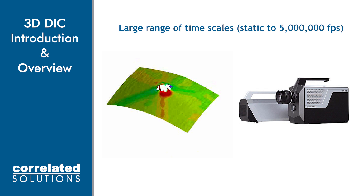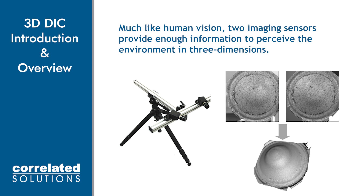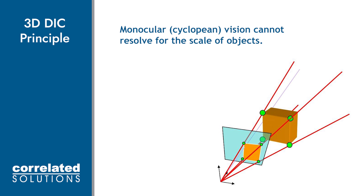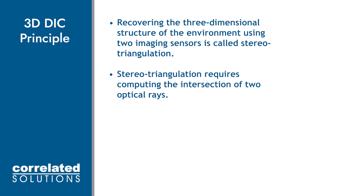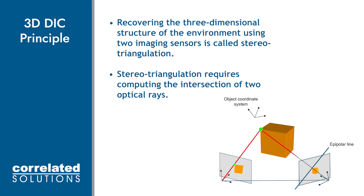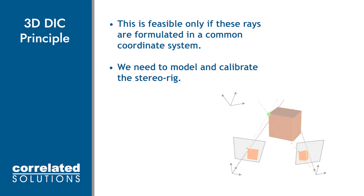Stereo imaging provides information from two sensors to perceive 3D information, similar to how two eyes allows us to have depth perception. With stereo imaging, we can now resolve how an object moves out of plane, which we can't with monocular vision. In order to build 3D information with two sensors, we use stereo triangulation. Stereo triangulation uses known information, like the locations of the sensors, to compute the intersections of optical rays in order to locate features in three-dimensional space. For this, we need these optical rays to be in a common coordinate system. In order to do this, we obtain a model of the stereo rig by calibrating it. The stereo rig is what we call the two-camera system.